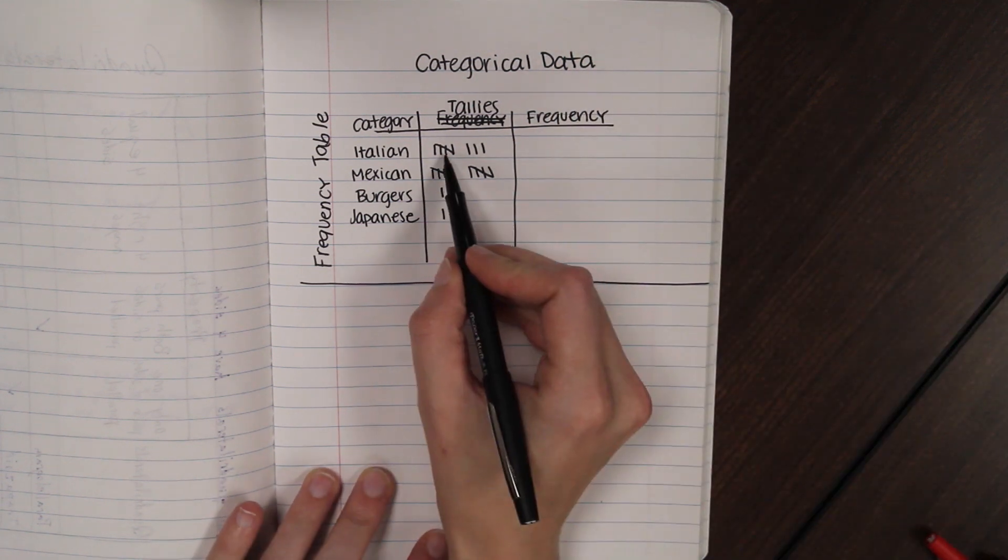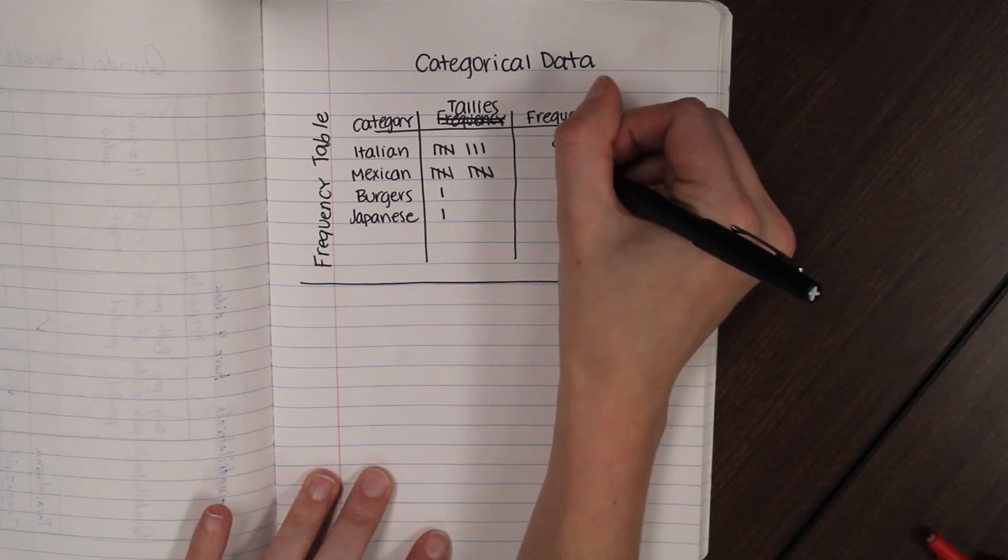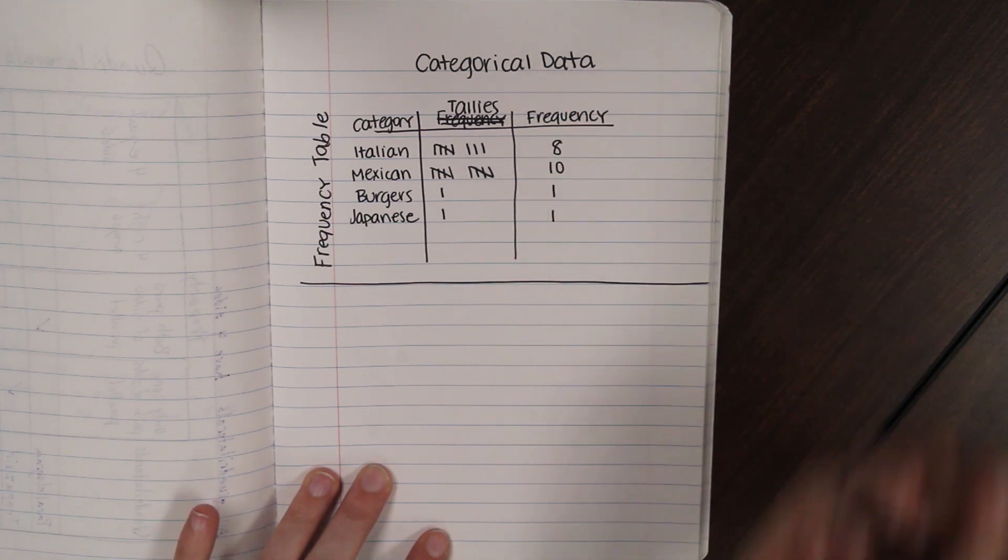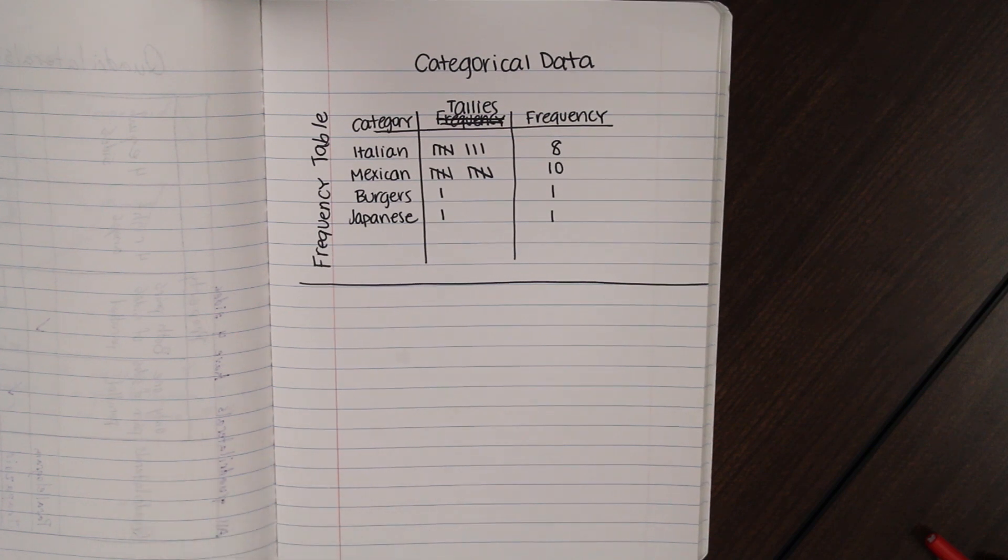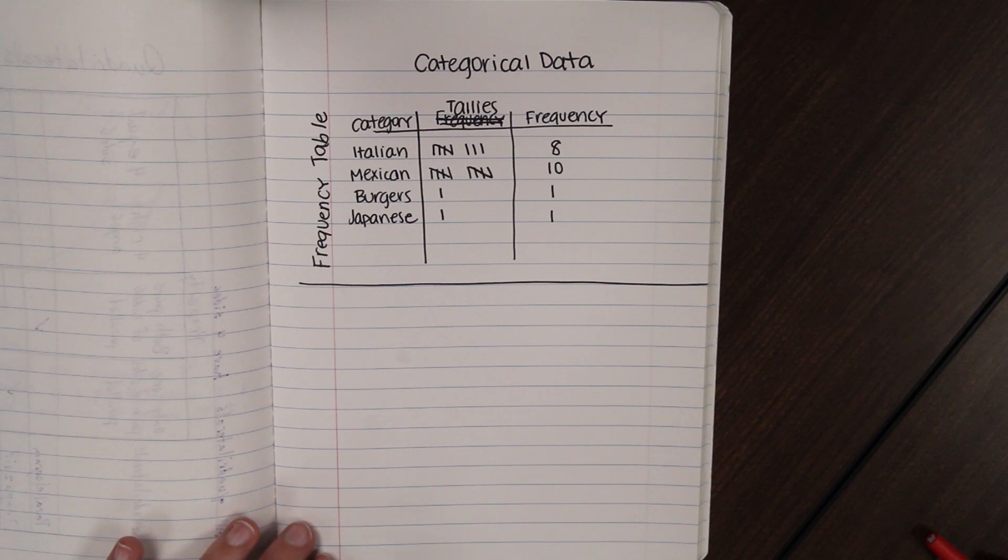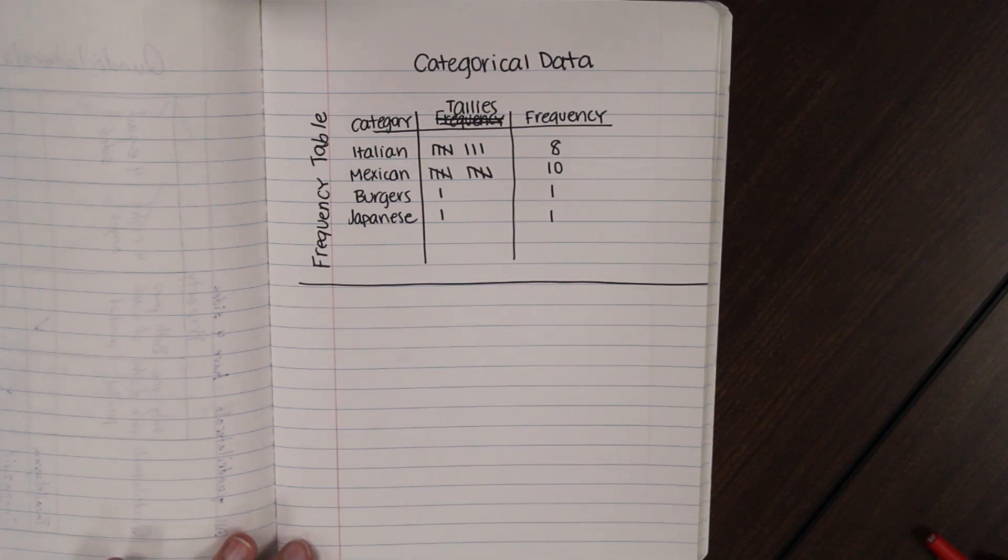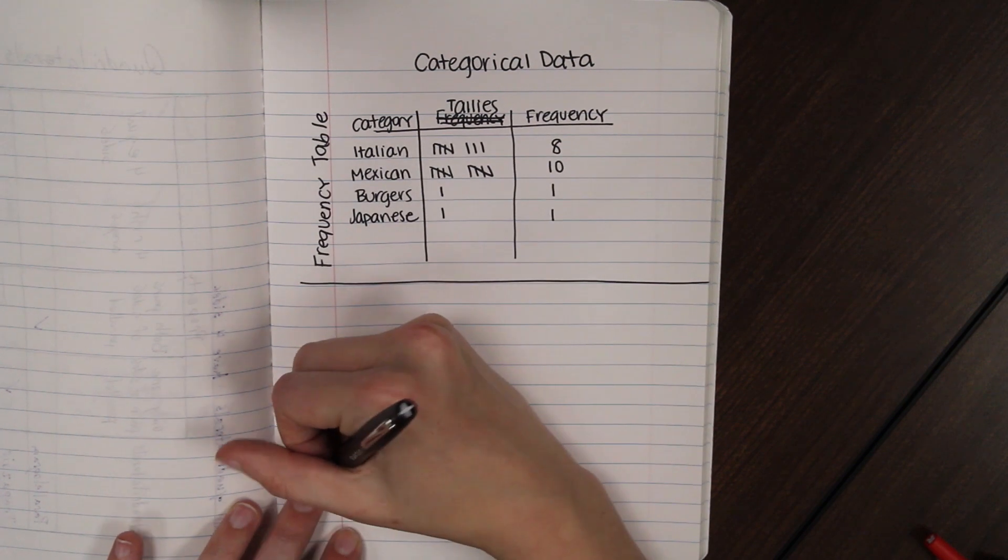Over here is going to be frequency. That's where we're going to take the number of tallies and just write it as a number. So eight, ten, one, and one. That's pretty much it for a frequency table. It's a good place to, a good graph to use when you're just keeping track of a poll question that you're asking. The second categorical data type of graph that we have is for, a bar graph.